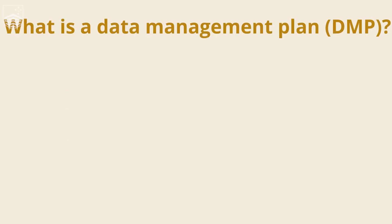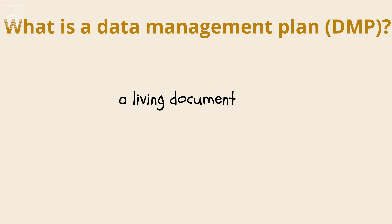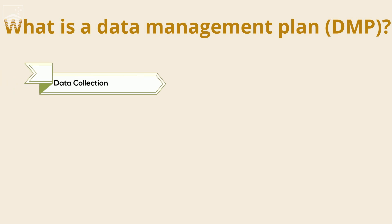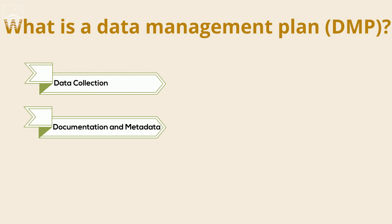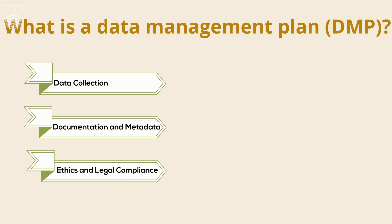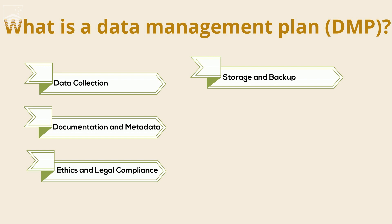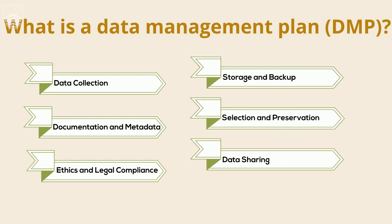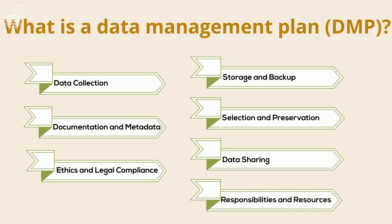So what is a data management plan? A data management plan, or DMP, is a living document that describes the data you expect to collect during your research project and how you intend to manage, archive, and share that data. A typical data management plan consists of the following components: data collection, documentation and metadata, ethics and legal compliance, storage and backup, selection and preservation, data sharing, and responsibilities and resources.